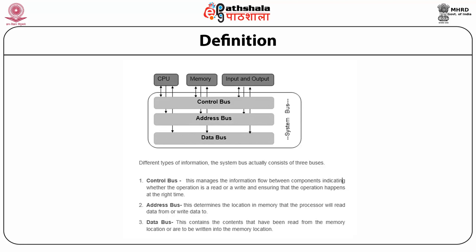The Control Bus, Address Bus, and Data Bus connect the CPU, memory, and input/output devices, acting as a channel between them. The Control Bus manages information flow between components, indicating whether an operation is a read or write and ensuring operations happen at the right time. The Address Bus determines the memory location the processor will read from or write to. The Data Bus contains the content read from or to be written into a memory location.